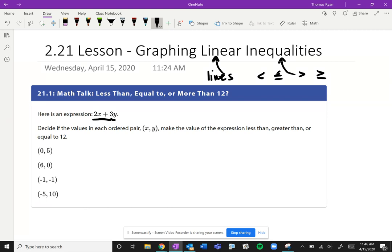We have the first one: (0, 5). We know that coordinates are always written x comma y, so we're going to substitute this in. We're going to replace x with 0 in parentheses, plus 3, and we're going to replace y with 5. Order of operations—let's do our multiplying first. 2 times 0 is 0, 3 times 5 is 15.